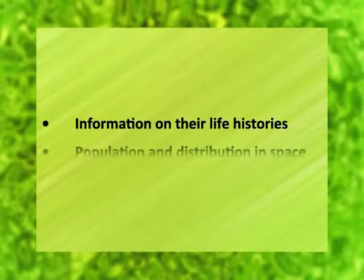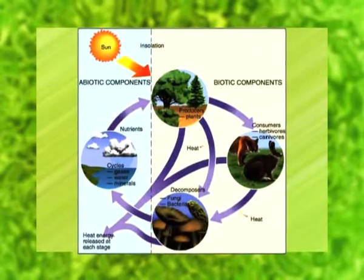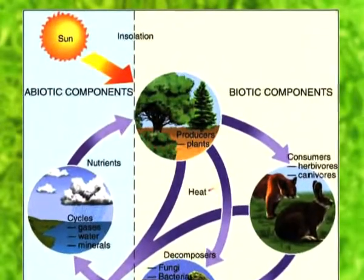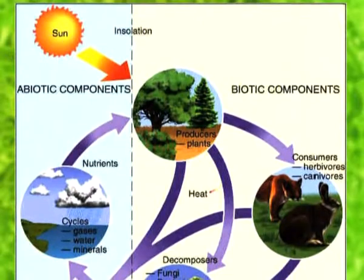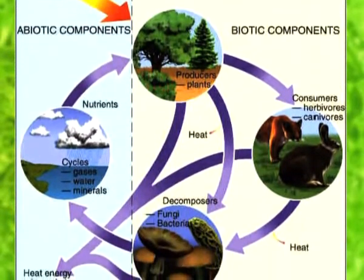The structure of ecosystem is, in fact, a description of the species of organisms that are present, including information on their life histories, population, and distribution in space. From a structural point of view, all ecosystems consist of two basic components: number one, biotic or living components; and number two, abiotic or non-living components.